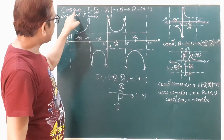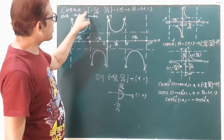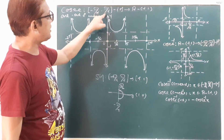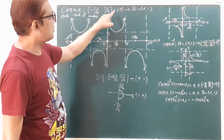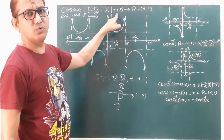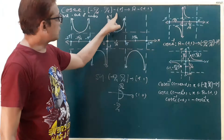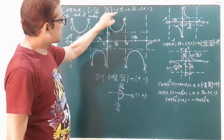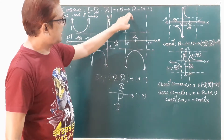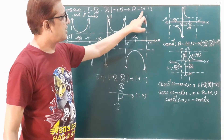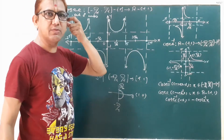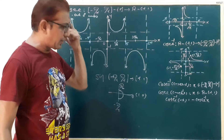So cosecant is the function from the closed interval minus pi by 2 to pi by 2, minus 0, and since we do not get 0 here, it maps to ℝ minus the open interval minus 1 to 1.